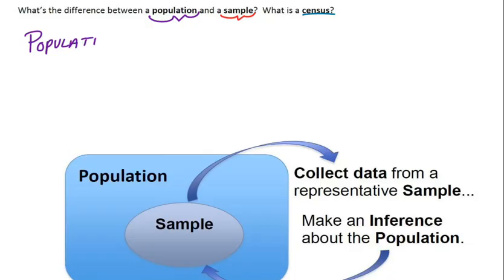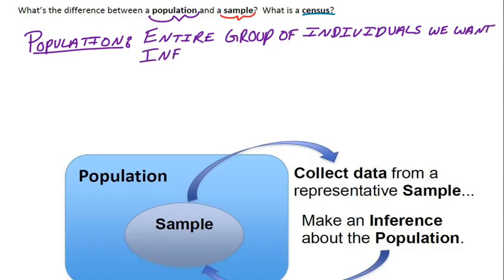So let's start with population. The definition of population in this sense is the entire group of individuals that we want to learn information about. So whatever specific group that might be, that might be all students at Lake Park High School, that might be all residents of Roselle, or it could be all the senior citizens living in the state of Illinois, for example.